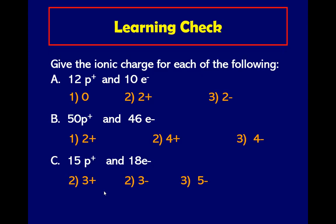Another learning check: give the ionic charge for each of the following. 12 protons and 10 electrons, so it's positive two. How about 50 protons and 46 electrons? Positive four. We have 15 protons, 18 electrons: positive three.